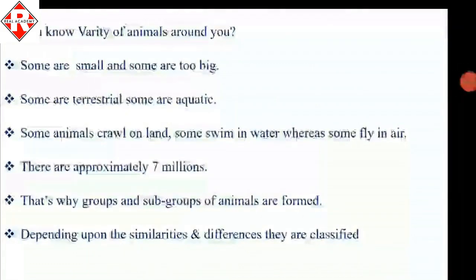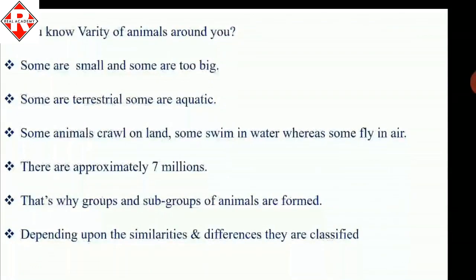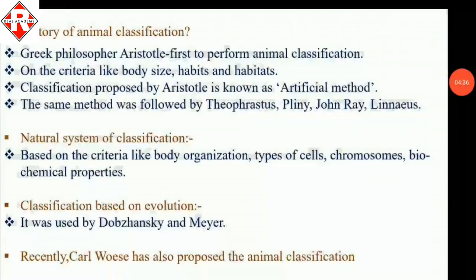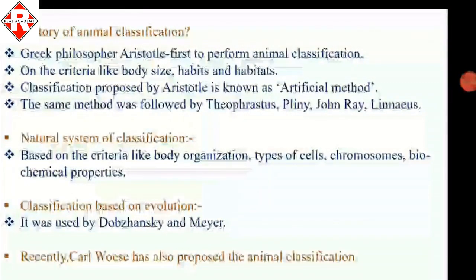All the animals present around us are of different varieties — some are small, some are big; some are terrestrial, living on land, whereas some are aquatic. Some crawl, some swim, some fly. There are approximately seven million species on the earth, and it is very difficult to study all of them. So we can classify them into different groups and subgroups by finding similarities and differences among them, making them easier to study.